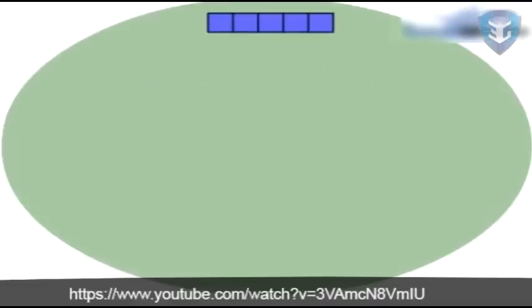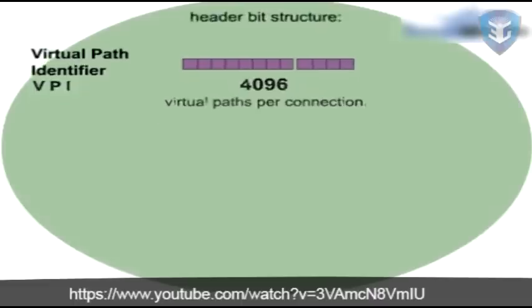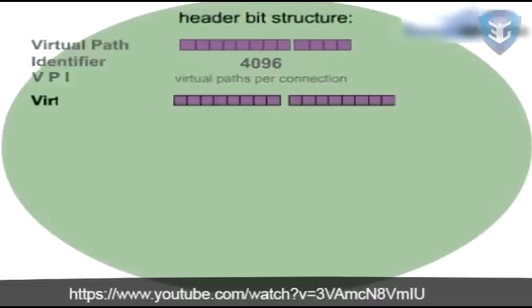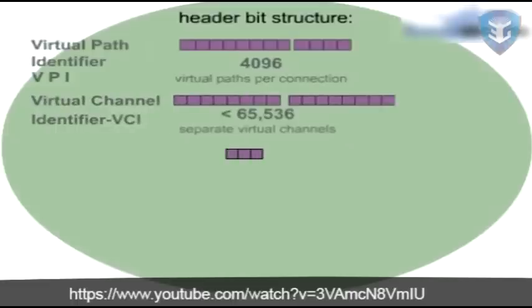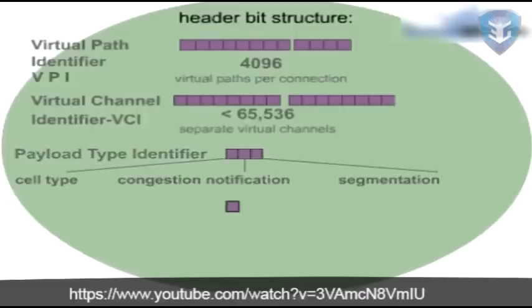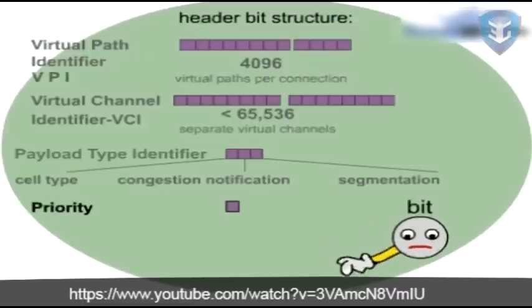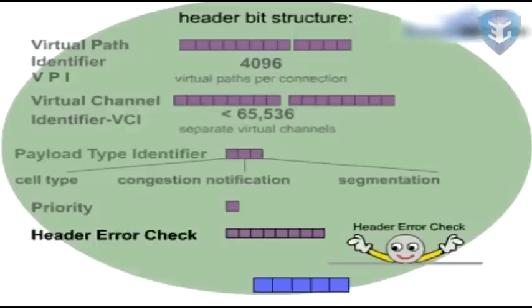The 5 header bytes encompass a virtual path identifier, VPI, supporting up to 4,096 virtual paths per connection. The 16 bits of the virtual channel identifier can assign up to 65,536 separate virtual channels to each virtual path. The 3 following bits comprise the payload type identifier, containing information on the cell type, congestion notification, and segmentation. Another bit indicates whether the cell is high or low priority. Finally, the header error check indicates possible bit errors within the first 4 bytes of the ATM header — it only verifies the integrity of the header, not of the payload. Payload verification is taken over by a higher layer protocol.